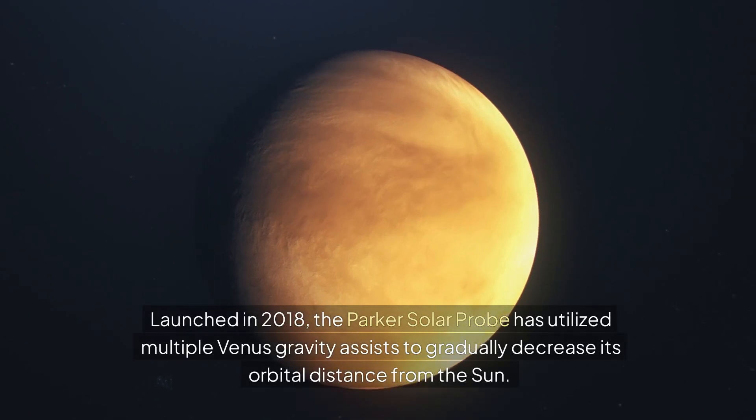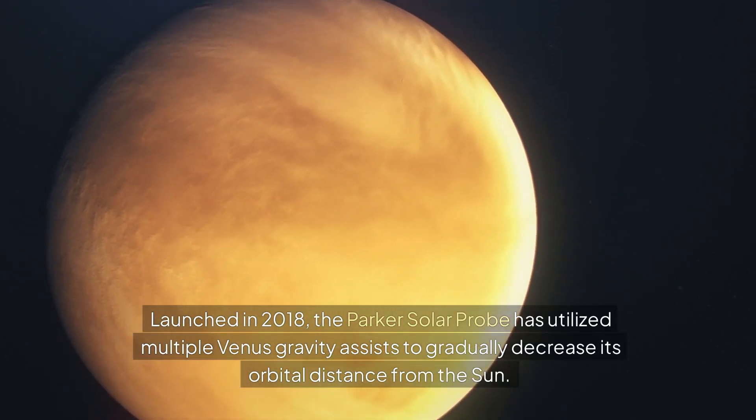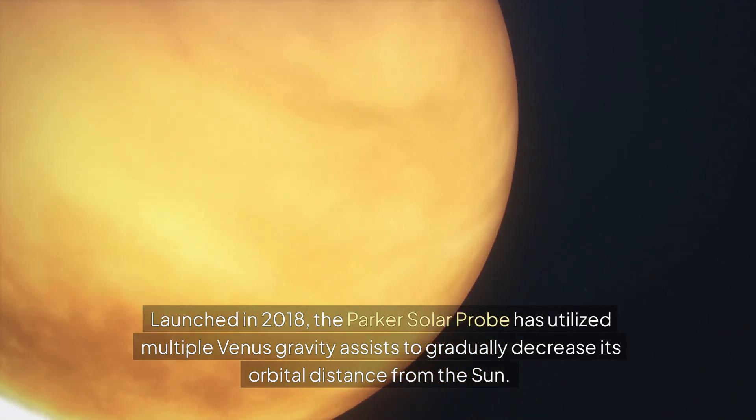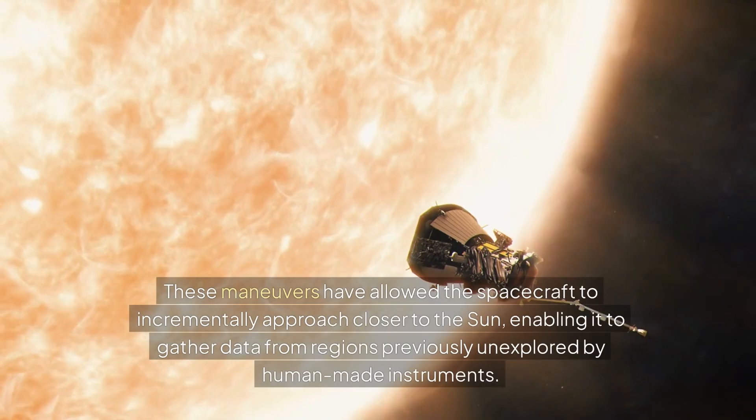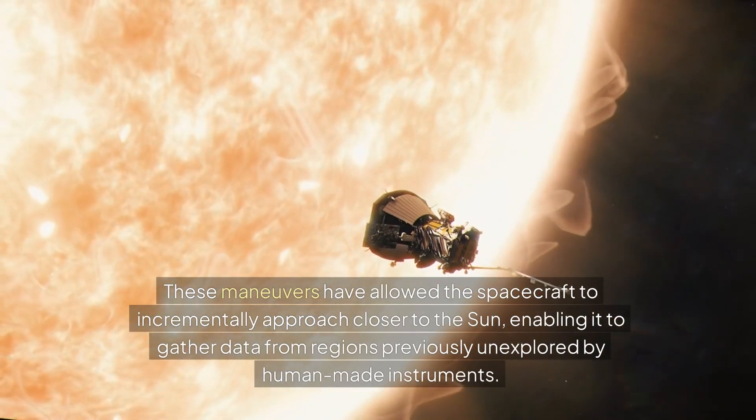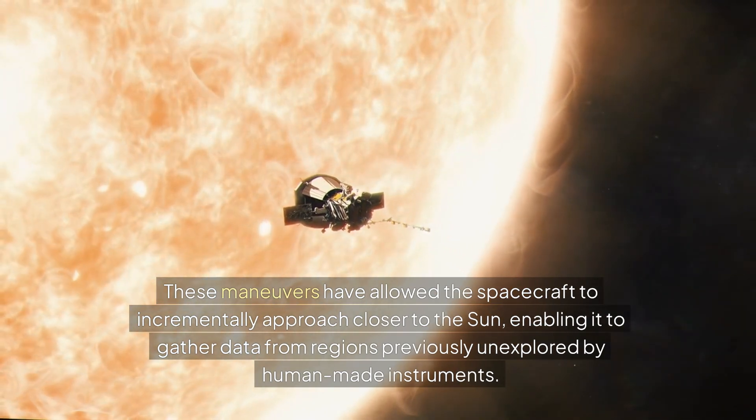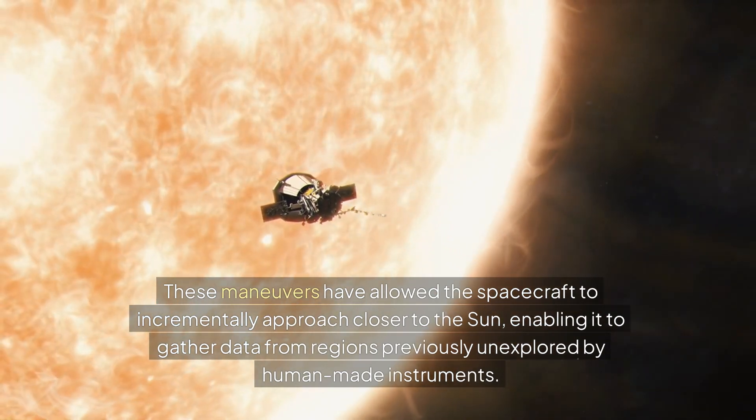Launched in 2018, the Parker Solar Probe has utilized multiple Venus gravity assists to gradually decrease its orbital distance from the sun. These maneuvers have allowed the spacecraft to incrementally approach closer to the sun, enabling it to gather data from regions previously unexplored by human-made instruments.